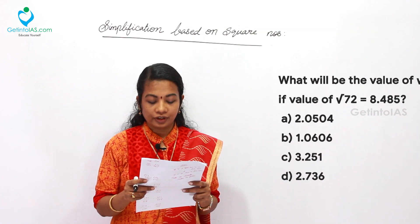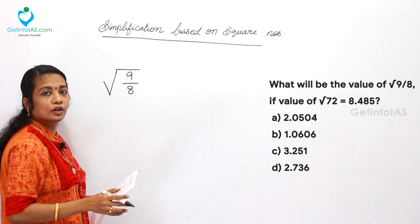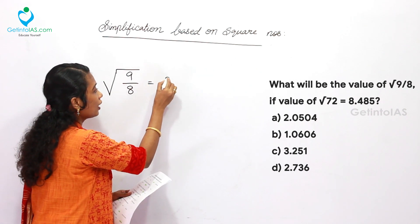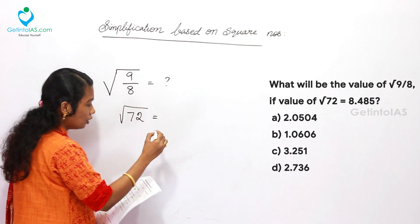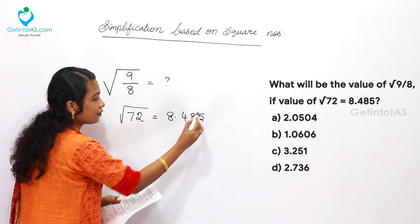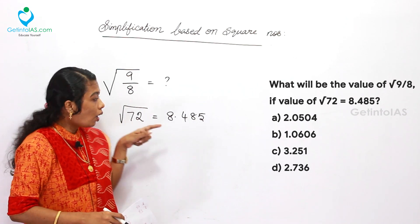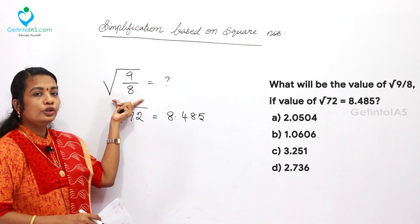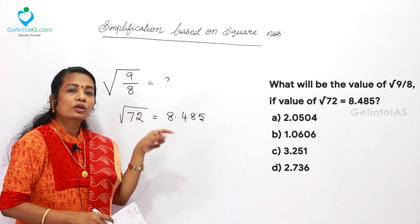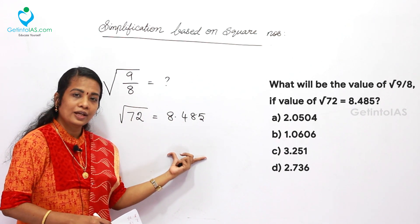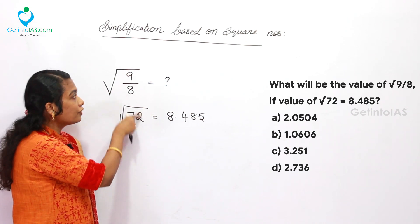The next question: what will be the value of √(9/8)? This square root applies to both numerator and denominator. You need to find √(9/8), given that √72 = 8.485. In most cases, the value for a non-perfect square will be given to you based on the question. These are conceptual base questions testing your knowledge. Here √72 is given in front of you, and on that basis you will solve the problem.